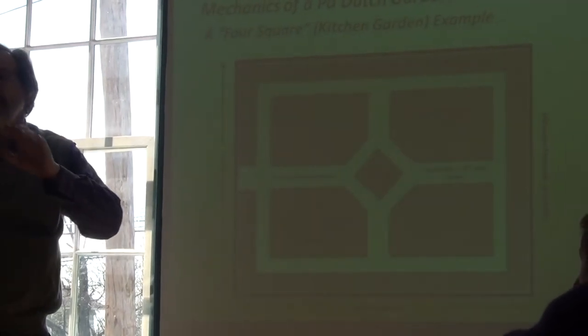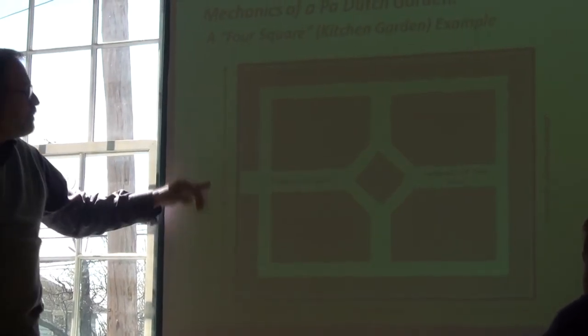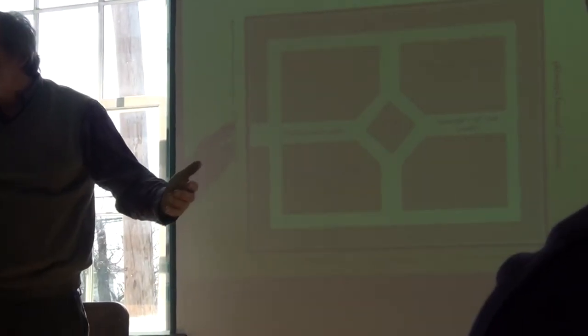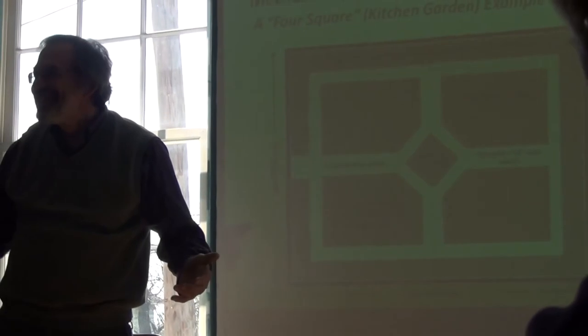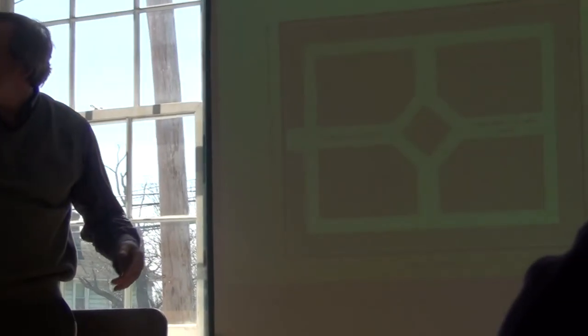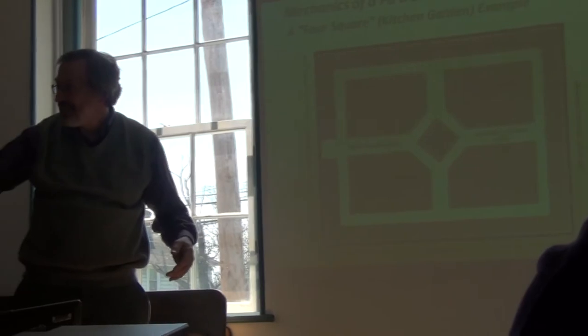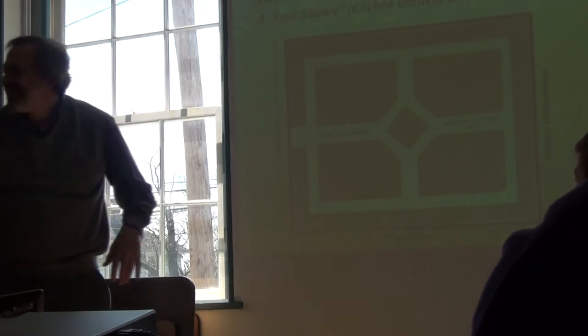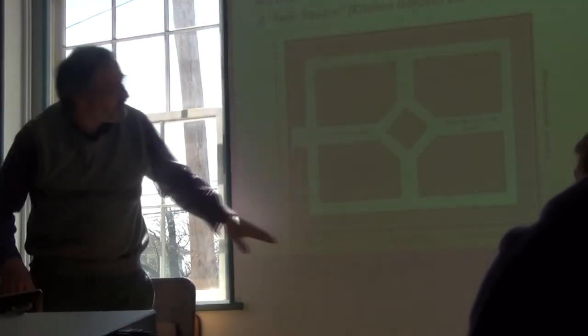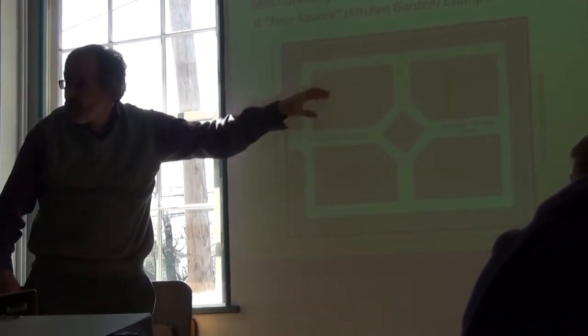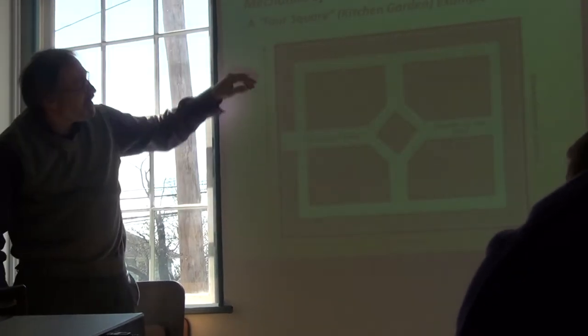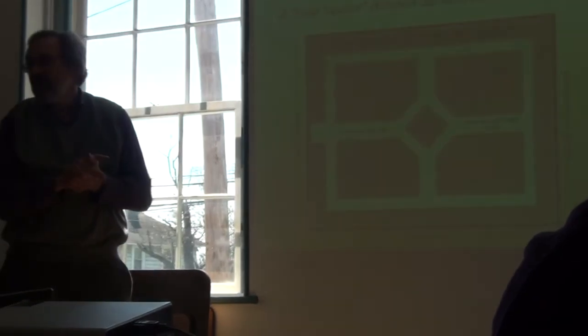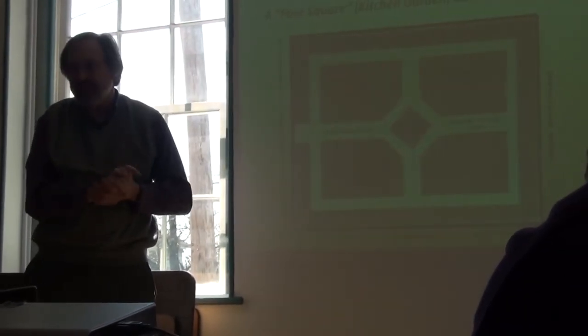The white is the paths in between. It seems like the typical dimensions were one perch on both sides. I thought it was 66 feet, I thought it was more than 16 but who knows. So typically it is square and then there's four squares inside.